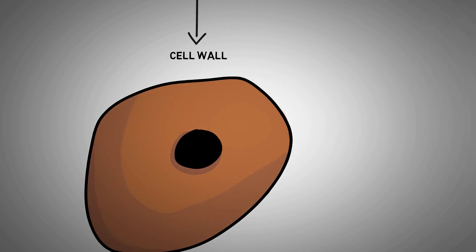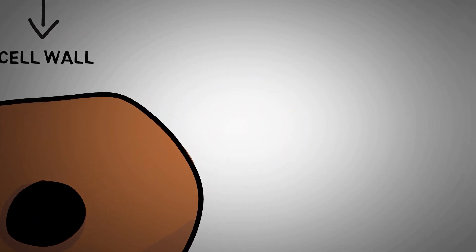Cell wall in the case of plant cell, whereas cell membrane in the case of animal cell.